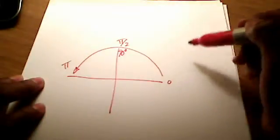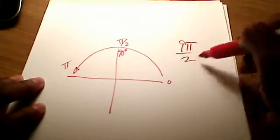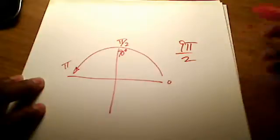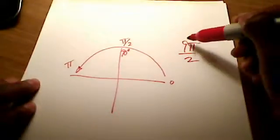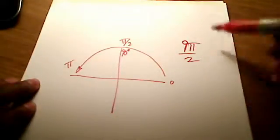OK, so, but we're dealing with 9π over 2. We'll deal with negative 9π over 2 in just a second. But let's deal with the positive here, 9π over 2. Where does that land us?